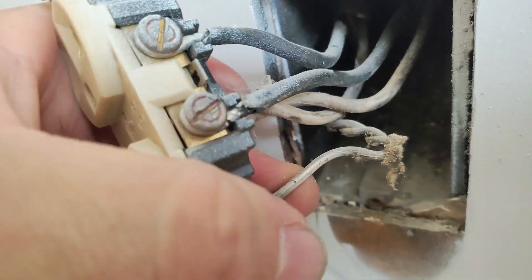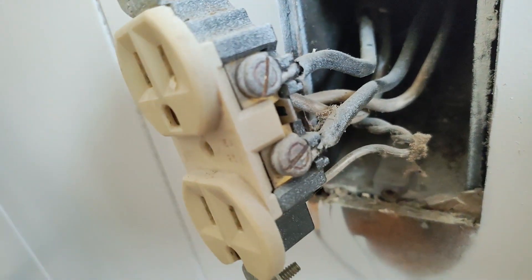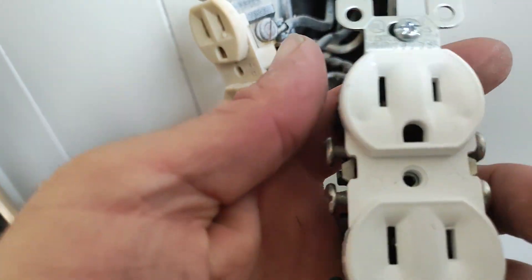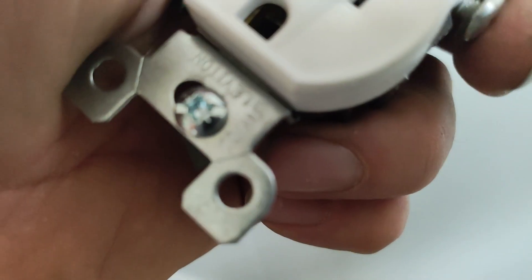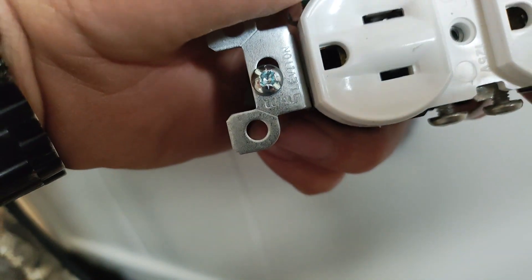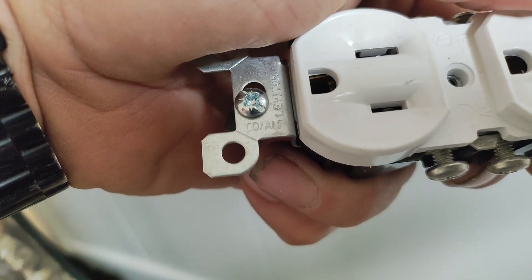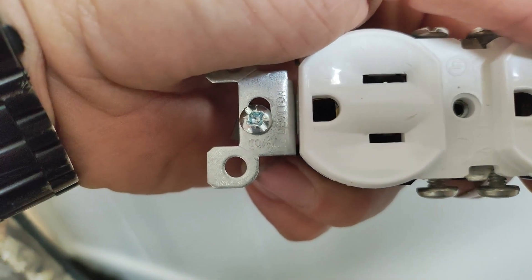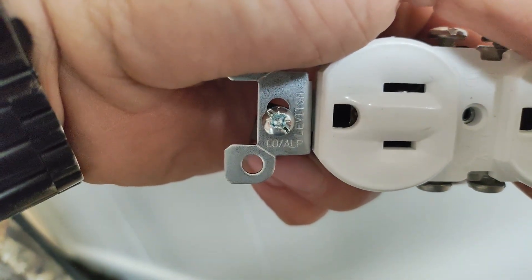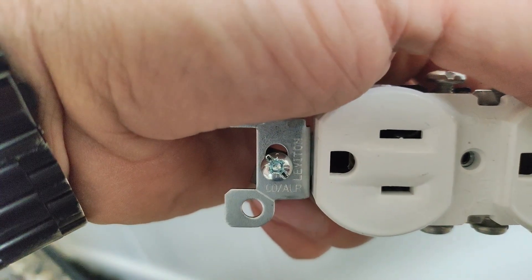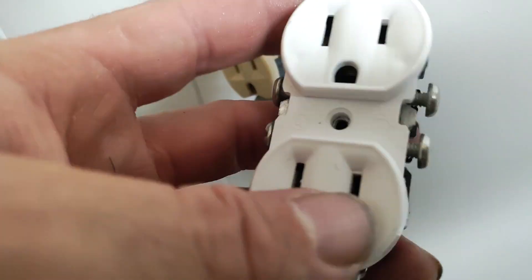For this one, they actually make what's called CO/AL devices, which is distinguishable at the bottom here on the yoke. You see it says CO/AL or ALR - that's for copper and aluminum or copper to aluminum conversion.